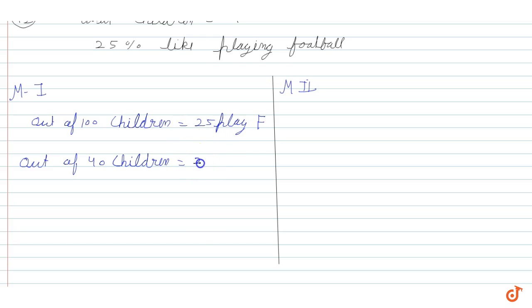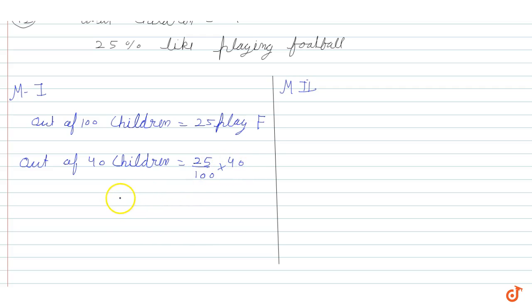We use the ratio 25 by 100 and multiply it by 40. So the number of children who play football is equal to 10. So 10 children play football.